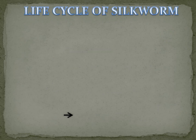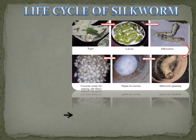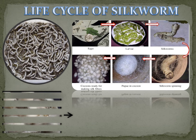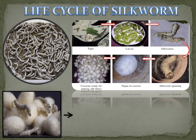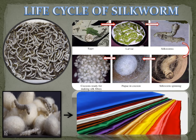Now let's see how silk is obtained. First we will see the life cycle of silkworm. As you can see, the egg is laid on the mulberry leaves, and this egg turns into larvae. This larvae is turned into silkworm after feeding on mulberry leaves. The silkworm then starts spinning the cocoon, and this cocoon is the silk fiber. Then this silk fiber is turned into silk fabric.